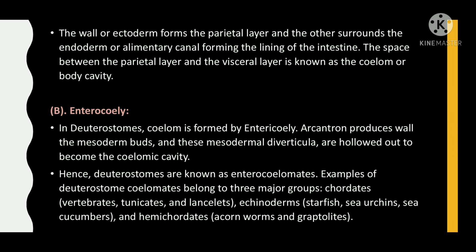In deuterostomes, the coelom is formed by enterocoely. The archenteron produces walls, mesoderm buds, and these mesodermal diverticula are hollowed out to become the coelom from the coelomic cavity. Hence deuterostomes are known as enterocoelmates.